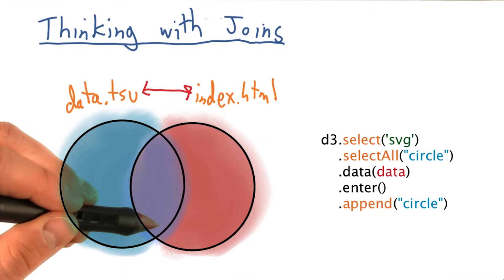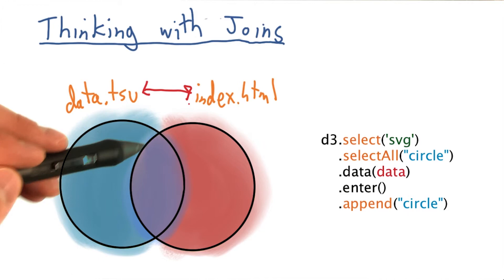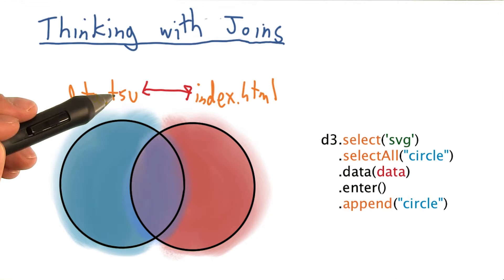The intersection between these two represents the HTML elements currently on our page that have already been bound to and associated with a row from our data file in a previous join made with dot data.